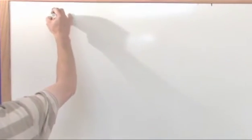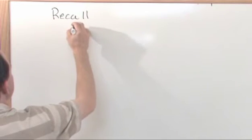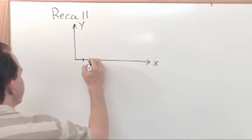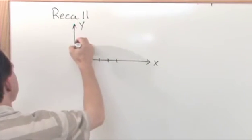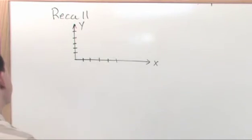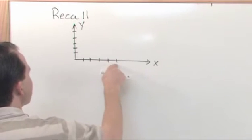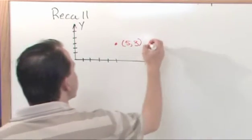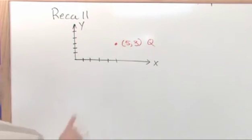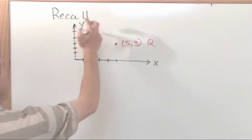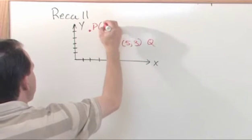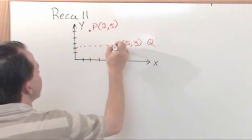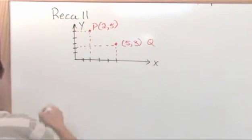So what would that look like? Just a review — there's nothing new here. If you have an x-y graph, let's say I have a point. I'm going to put a couple of points on here and talk about them. What if I have a point at (5, 3)? We're going to call that point Q. And then we're going to put another point where x is 2 and y is 5, and we're going to call that point P. Because you go over 2, up 5. So this is the point, this is the x value, and this is the y value. This is two dimensions — there's nothing new here.